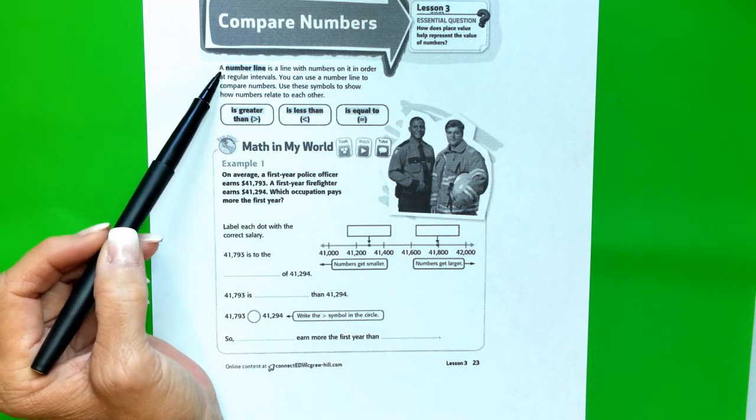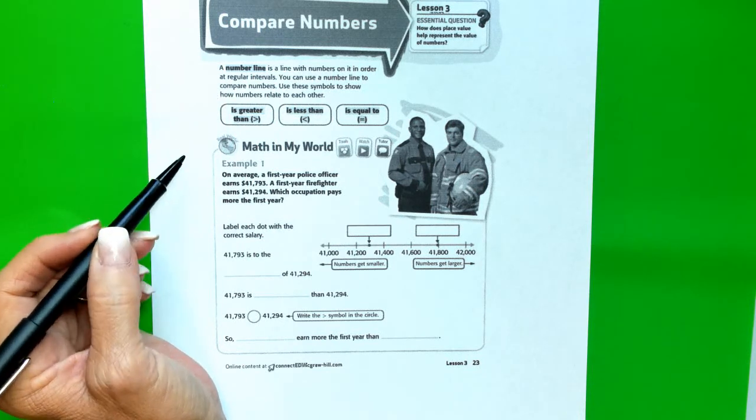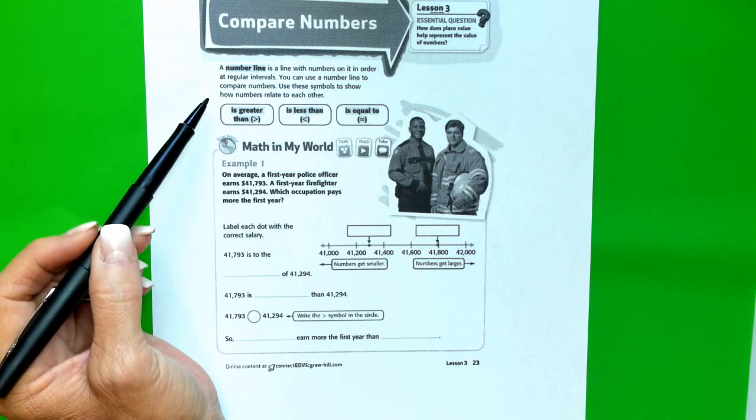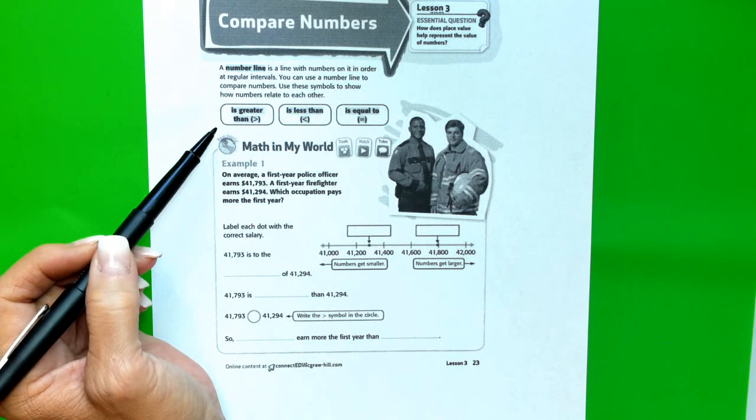Let's read. It says a number line is a line with numbers on it in order at regular intervals. You can use a number line to compare numbers. Use these symbols to show how numbers relate to each other.